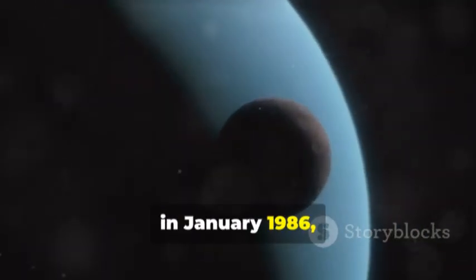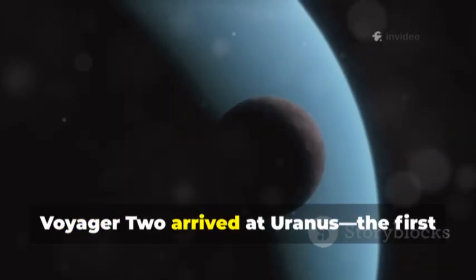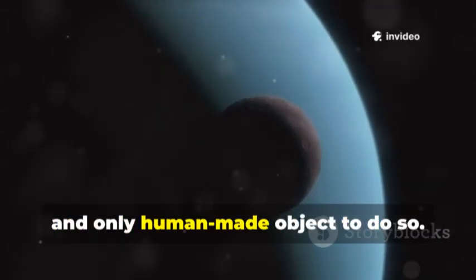In January 1986, after nearly nine years, Voyager 2 arrived at Uranus, the first and only human-made object to do so.